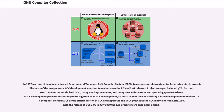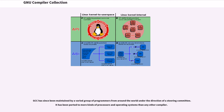EGCS development proved considerably more vigorous than GCC development, so much so that the FSF officially halted development on their GCC 2.x compiler, blessed EGCS as the official version of GCC, and appointed the EGCS project as the GCC maintainers in April 1999. With the release of GCC 2.95 in July 1999, the two projects were once again united. GCC has since been maintained by a varied group of programmers from around the world under the direction of a steering committee. It has been ported to more kinds of processors and operating systems than any other compiler.